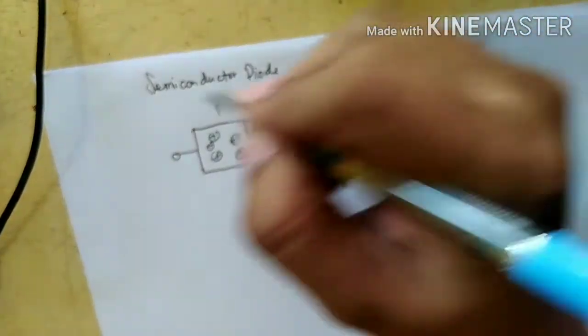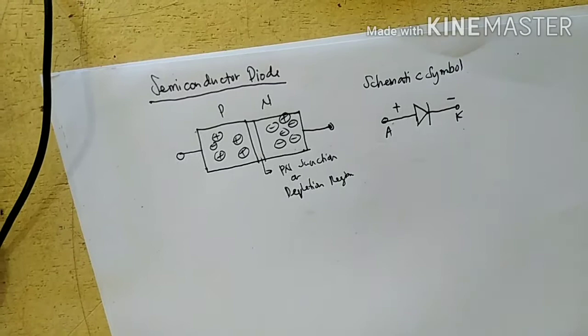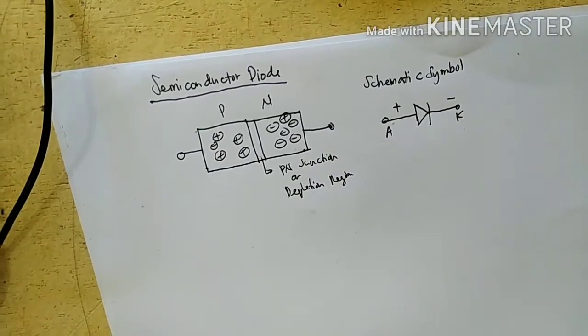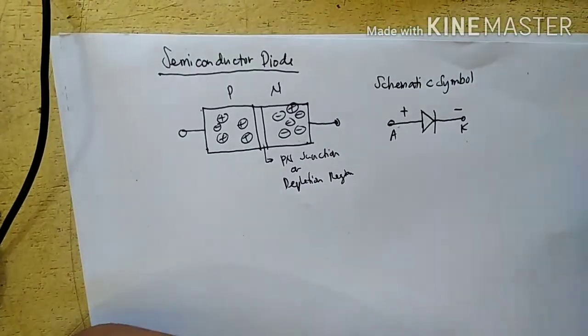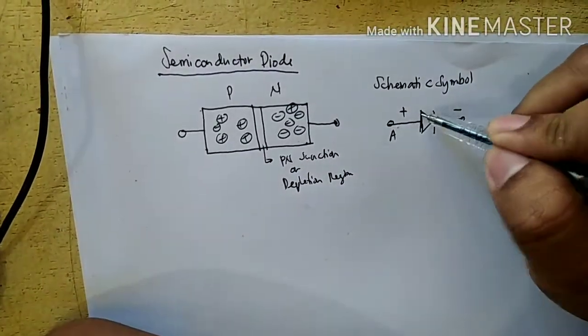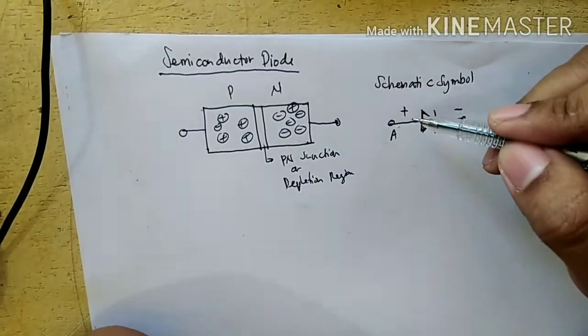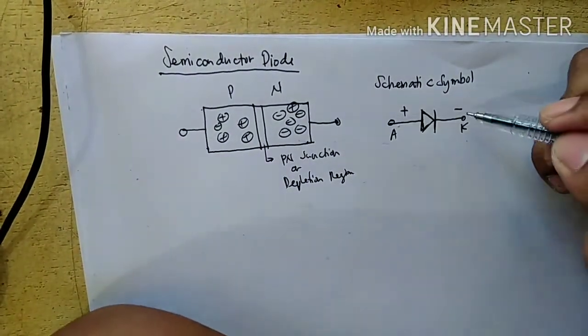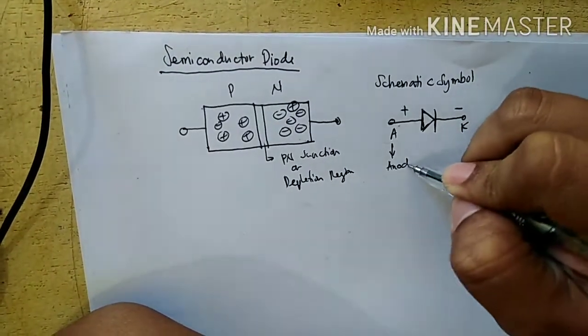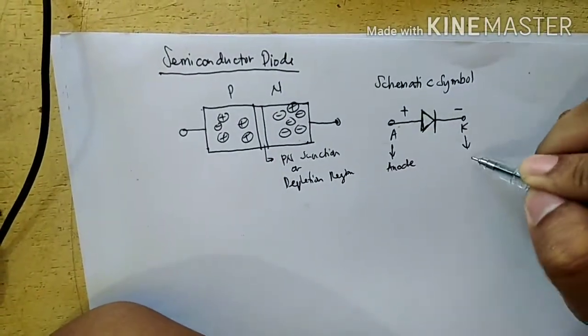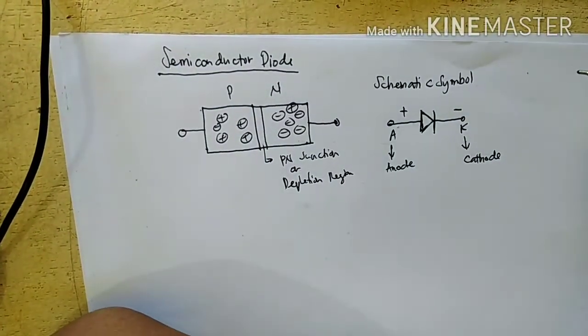In electronics, the symbol for semiconductor diode is this one - a triangle and a straight line. This is a positive terminal, this is the negative terminal. This is referred to as the anode, this is the cathode. So positive, negative.